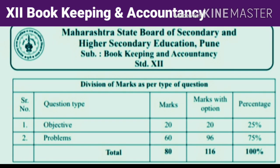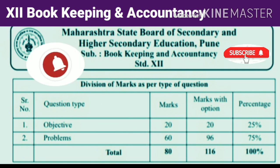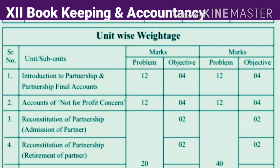Friends, we know that our bookkeeping and accountancy paper is for 80 marks. Those 80 marks are divided into two parts: 20 marks of objectives and 60 marks of problems.